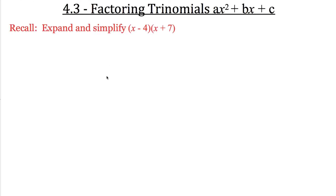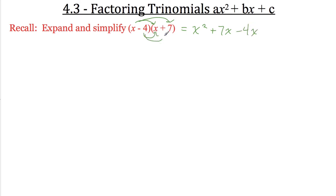A little recall. What we're going to do here is we're going to expand and simplify a binomial times a binomial. We've done this several times previous in the course, so we're going to say x times x is x squared, x times 7 is 7x. Negative 4 times x is negative 4x, and negative 4 times 7 is negative 28. Collect our like terms, and what we have is x squared plus 3x minus 28.